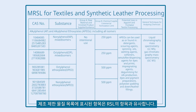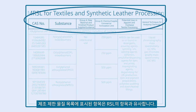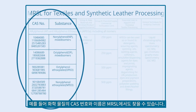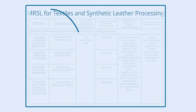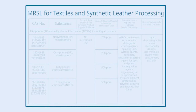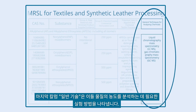The items shown in a Manufacturing Restricted Substance List are similar to those of an RSL. For example, the CAS numbers and names of the substances can also be found in the MRSL. The Potential Uses column explains when and for what purpose the substance is commonly used during manufacturing. The last column, General Technique, indicates the laboratory methods required for analyzing the concentrations of these substances.